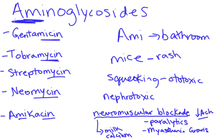So that's aminoglycosides: Amy for aminoglycosides is going to the bathroom where she sees all these mice — mycin, mycin. They're squeaking and it's really ototoxic. It's interfering with her ability to pee, so it's nephrotoxic. The whole experience makes her really weak, causing neuromuscular blockade, and she has to take a glass of milk or calcium to recover.